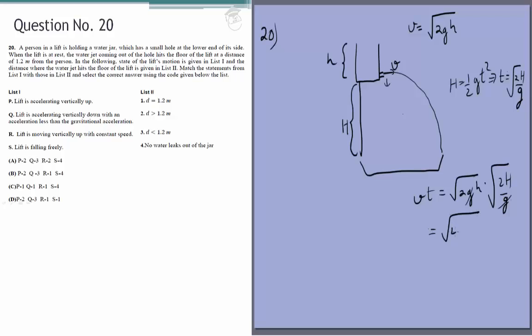And the questions are given: lift is accelerating vertically up, accelerating vertically down, what is this value of d? It is root of 4h, and the values of capital H and small h are given. Wait a second, the question is when the lift is at rest this equals d equals 1.2, and then you keep it in motion.